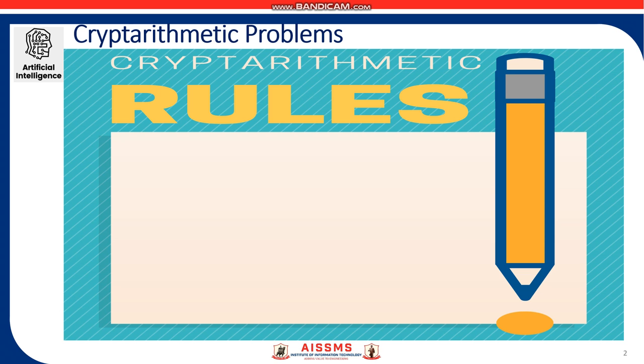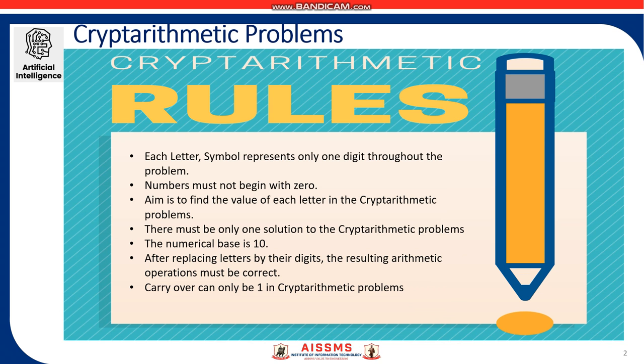There are certain rules for solving cryptarithmetic problems. They are: each letter or symbol represents only one digit throughout the problem, that is, each letter represents a unique digit. Numbers must not begin with zero. The aim is to find the value of each letter in the cryptarithmetic problems. There must be only one solution to the cryptarithmetic problem. The numerical base unless specifically stated is 10.